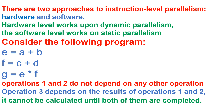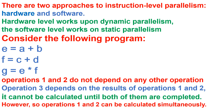Operation three cannot be calculated until both operation one and two are completed. Operations that do not depend on each other can be run simultaneously. So operation one and two can be run simultaneously.